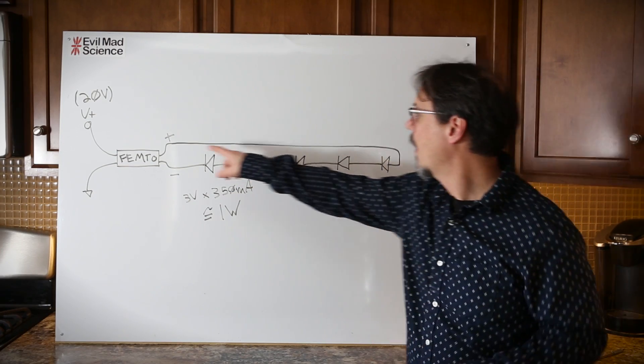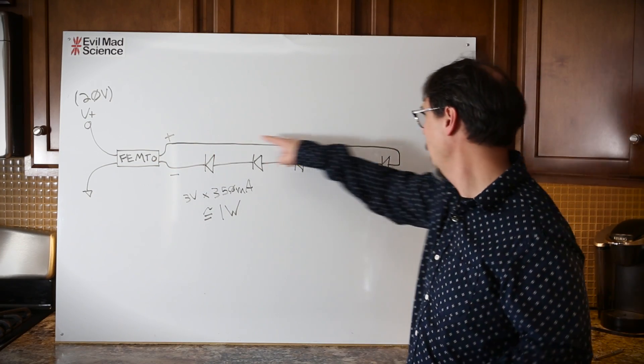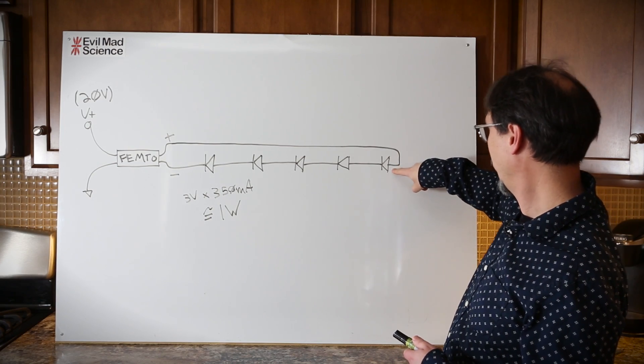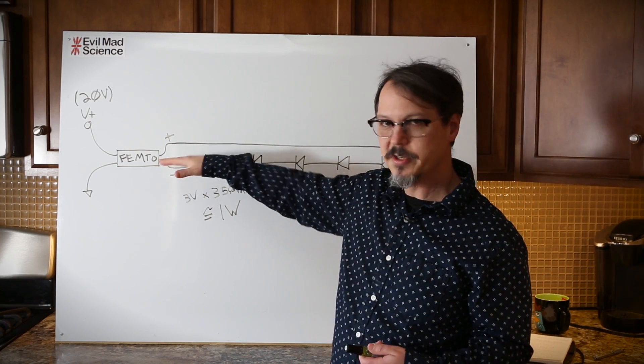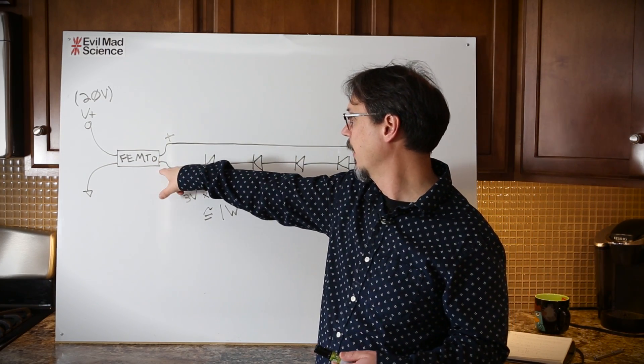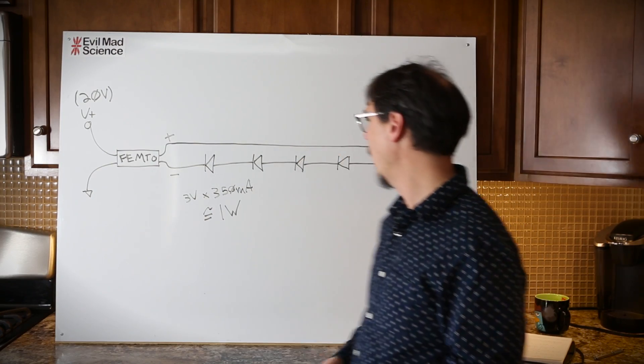I've got five LEDs. My plus comes out of the femto into the anode of the first LED, and they're all just in series, all the way back to the negative input on this guy. 20 volts in, ground, that's it.